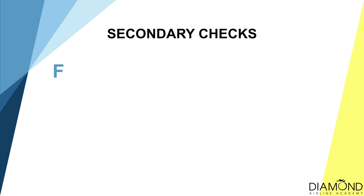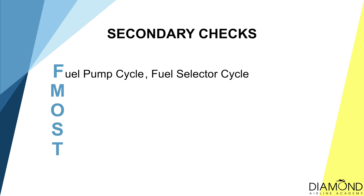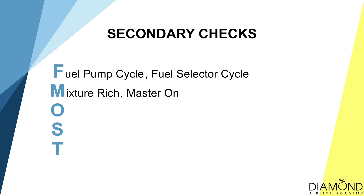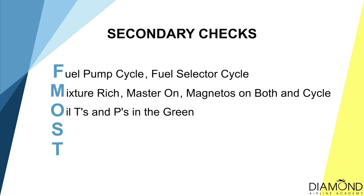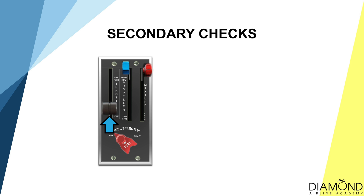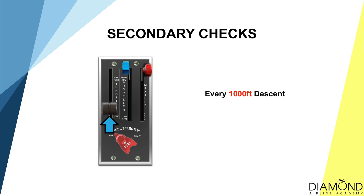The troubleshoot checks consist of: cycle the fuel pump, cycle the fuel selector, cycle the mixture and the master, check the magnetos on both and cycle, verify the oil temperature and pressure is in the green range, re-engage the starter, and cycle the throttle. To avoid over-cooling the engine during a prolonged descent of a practice forced landing, every 1,000 feet of descent apply full throttle for a couple of seconds to keep the engine warm.